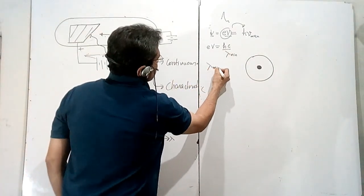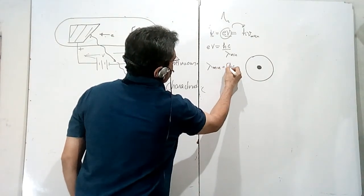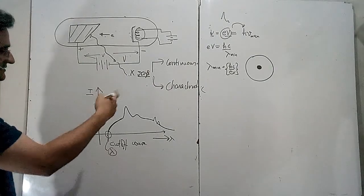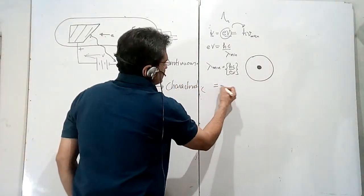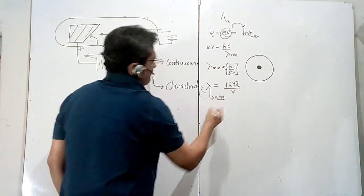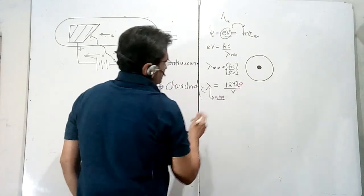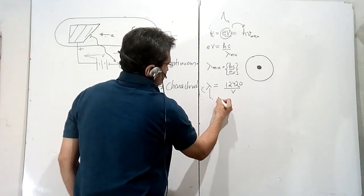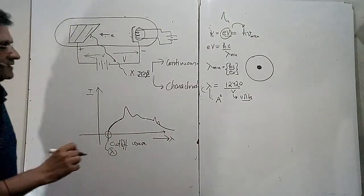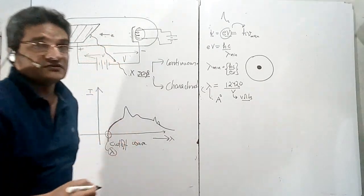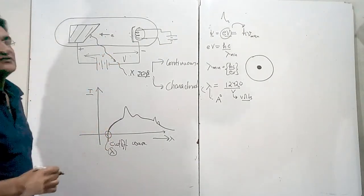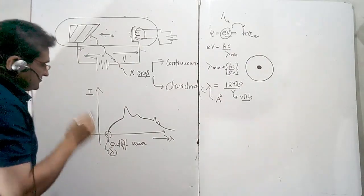When frequency is maximum, lambda is minimum — they are inversely proportional. So lambda minimum = hc / eV. In problems asking for lambda minimum, you can straight away use the shortcut formula: 1242 / V (in volts) gives lambda in nanometers. If you use 12420, which is the value of hc, you get lambda in angstroms, with V in volts. Don't confuse this with the de Broglie wavelength of the electron — that is different from the cutoff wavelength of the photon.